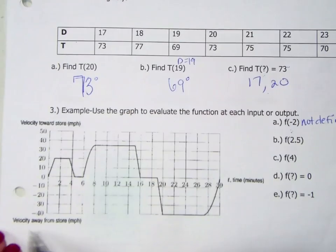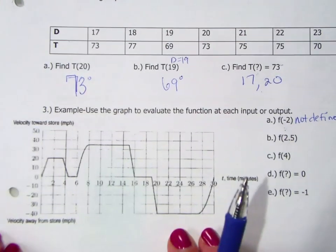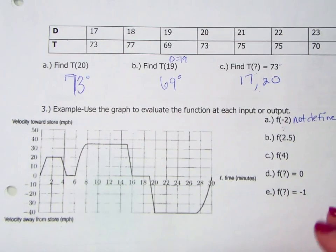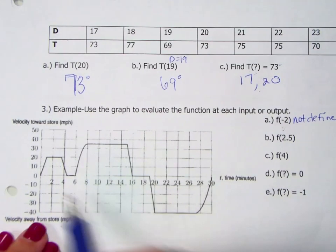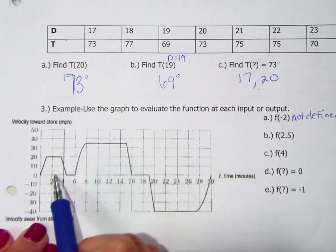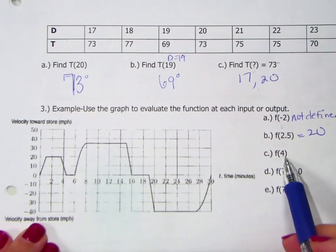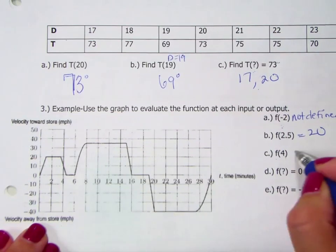Alright, f of positive 2.5. So at 2.5, what's our output? And that would be 20. f(4). So when the input is 4, what's the output? So go to 4, up, our output is 10.